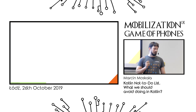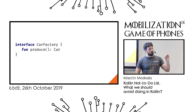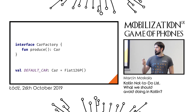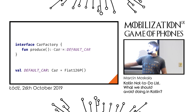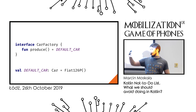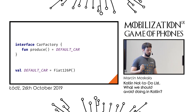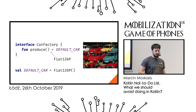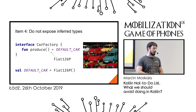But what if you cannot do that? Imagine you write an interface for a library to produce cars, with one particular car set as a default. If the type is specified in the interface, someone might infer it away — and then someone else removes the type entirely for brevity. Congratulations, now you can only produce one particular model. So please do not expose inferred types, especially when they are part of your public API.